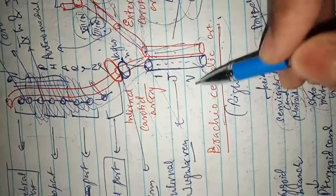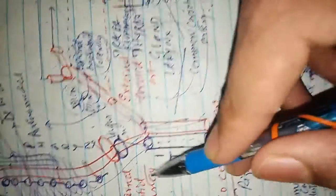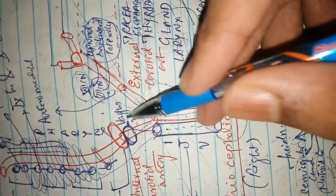Laterally there is internal jugular vein. Posterolaterally there will be vagus nerve on both sides.